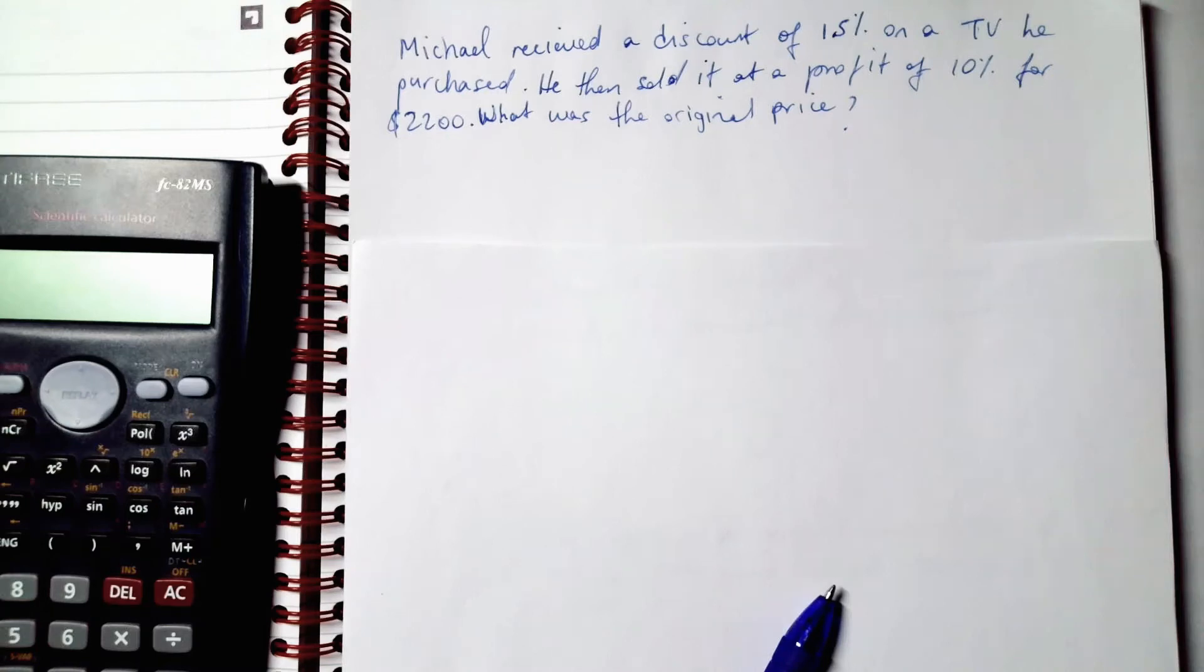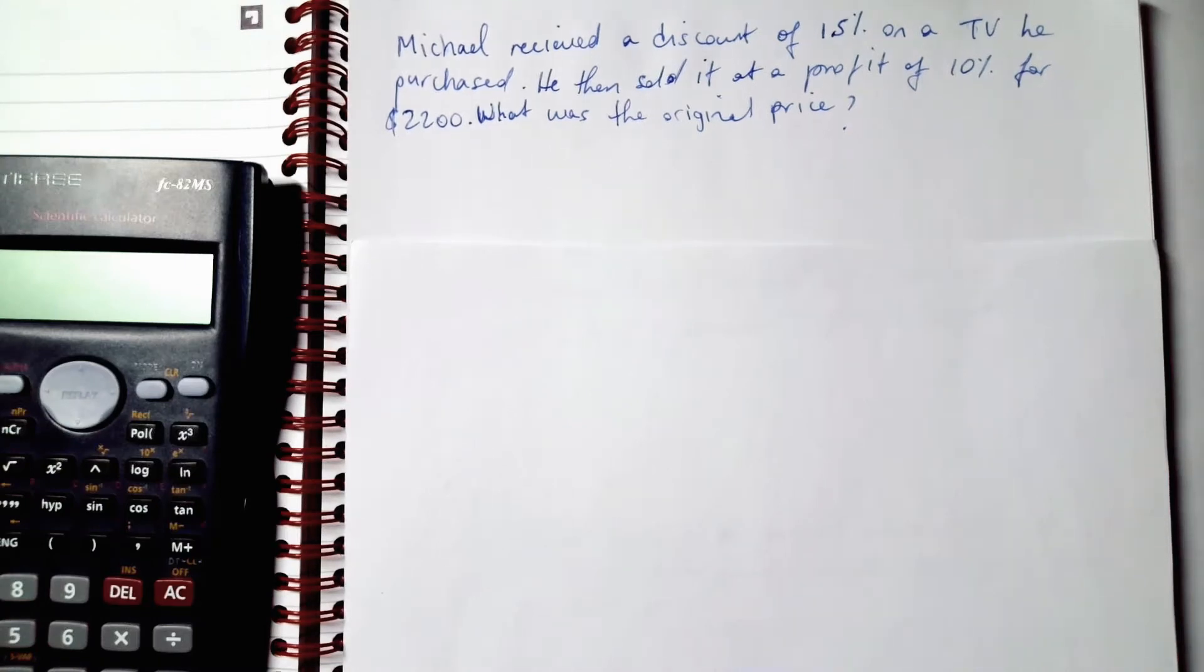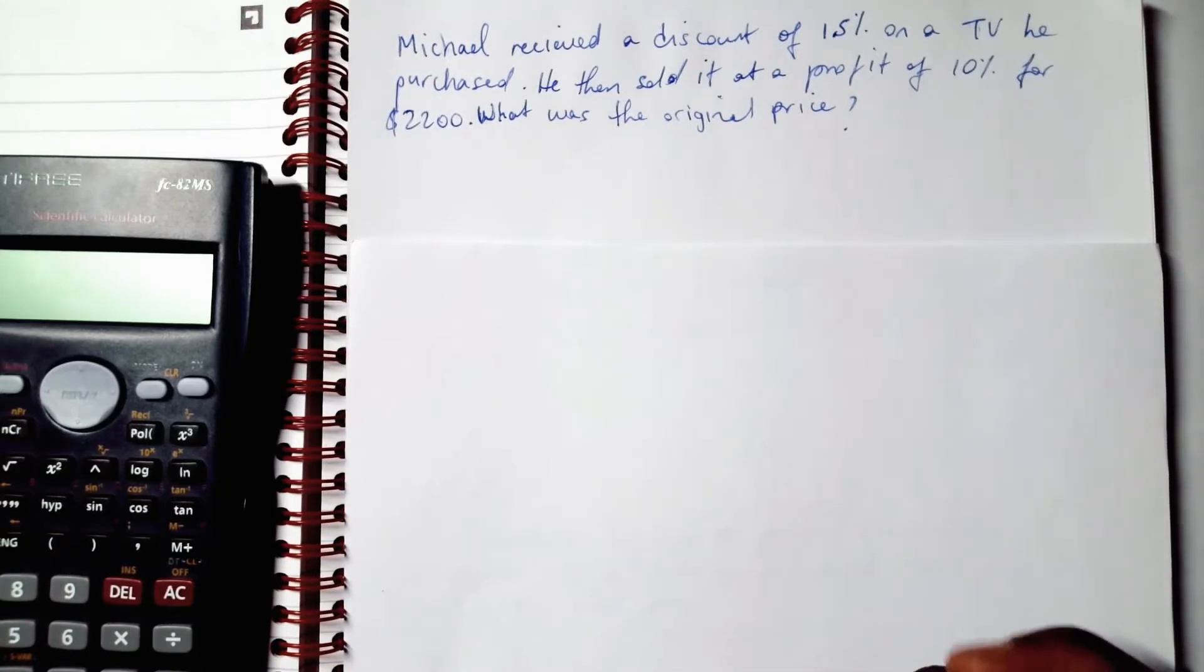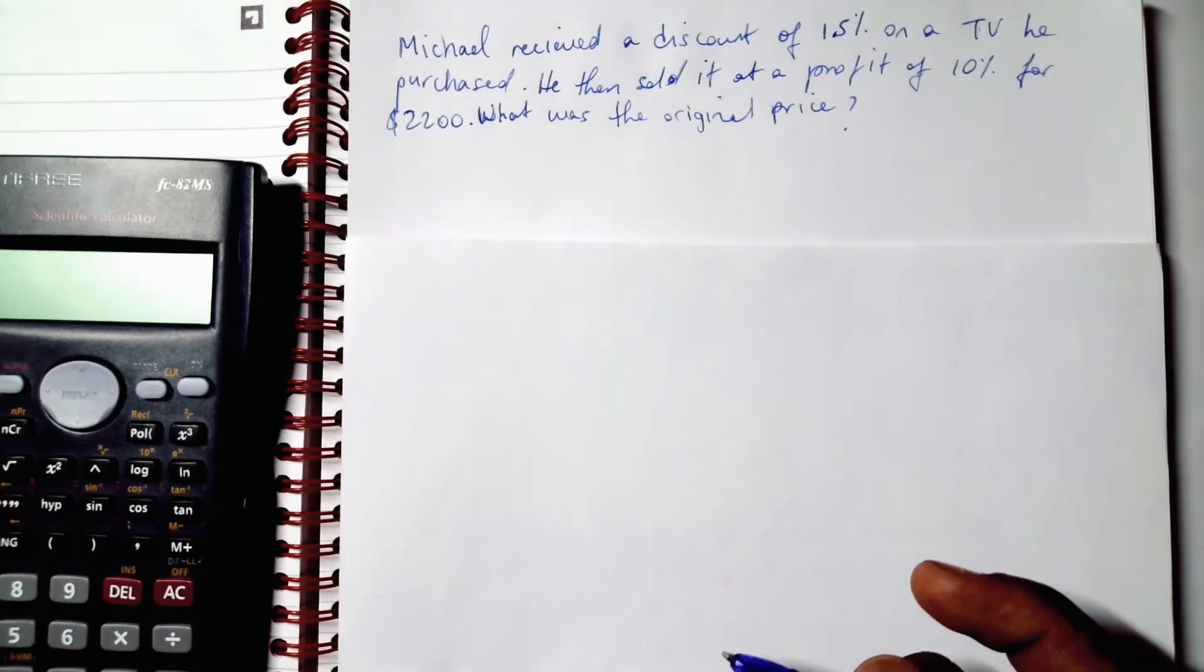All right, so welcome back to another episode where we crank out some more profit and loss questions. Michael received a discount of 15% on a TV he purchased. He then sold it at a profit of 10% for $2200. What was the original price?